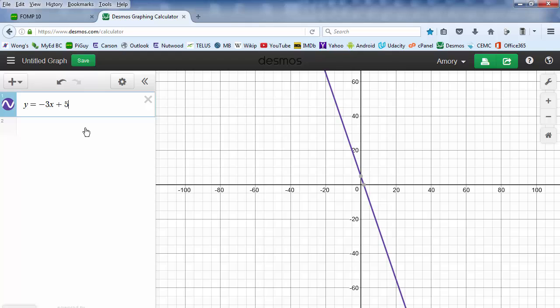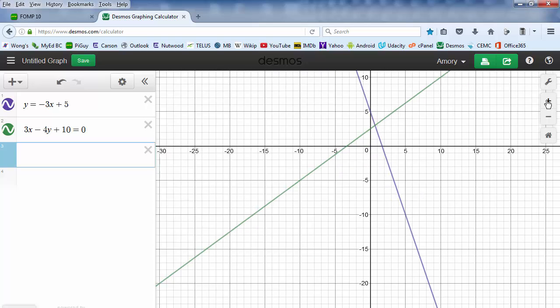You can hit Enter for your next equation. We can also enter the equation in general form. So 3X minus 4Y plus 10 equals 0. That's in general form. Desmos has no problem working in general form. And again, we can zoom in if we want to see more detail.